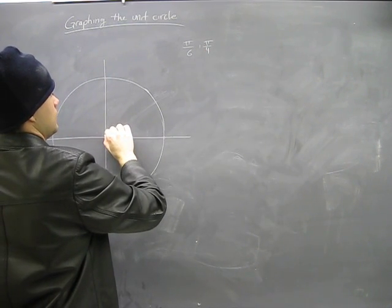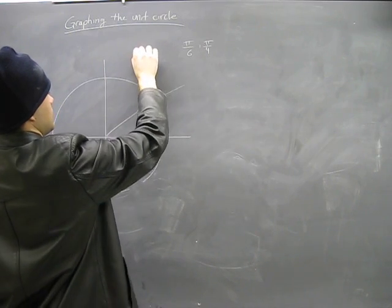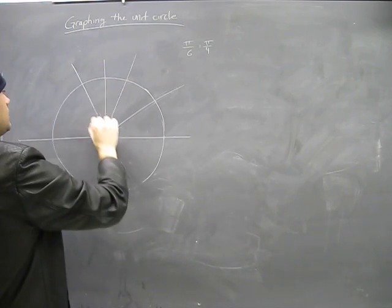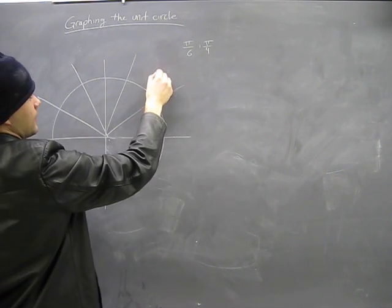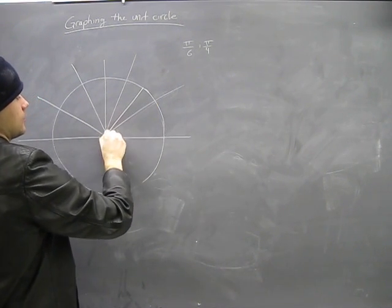Pi sixth will be dividing this into six things like this, and pi quarters will be dividing it into... I'm only going to draw it in there so I can see the difference here.